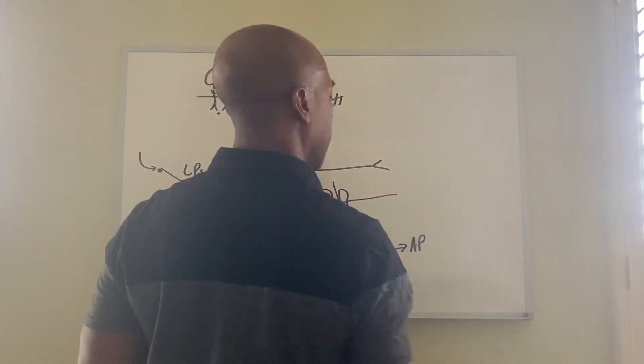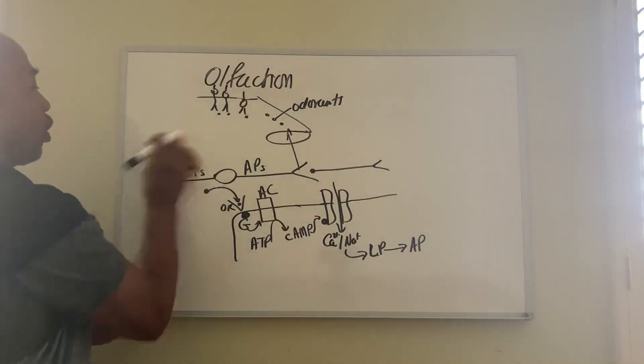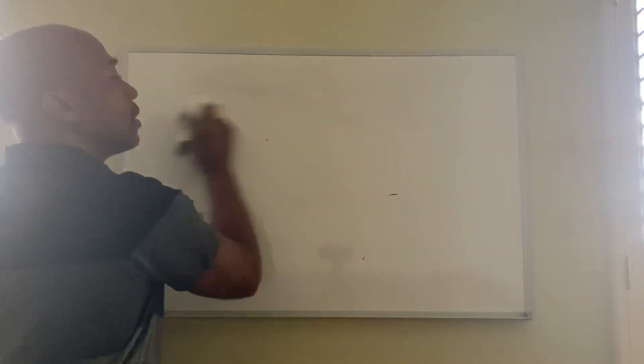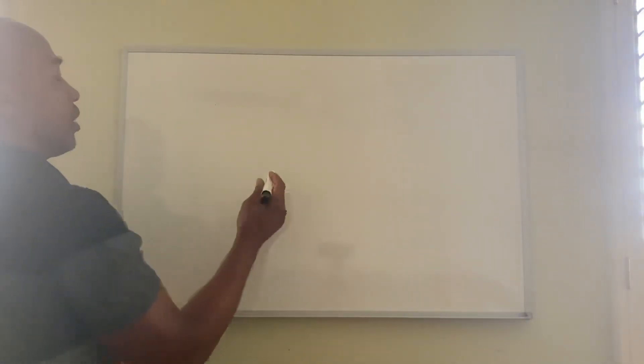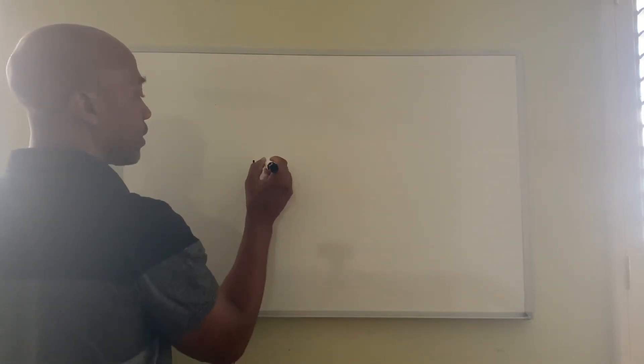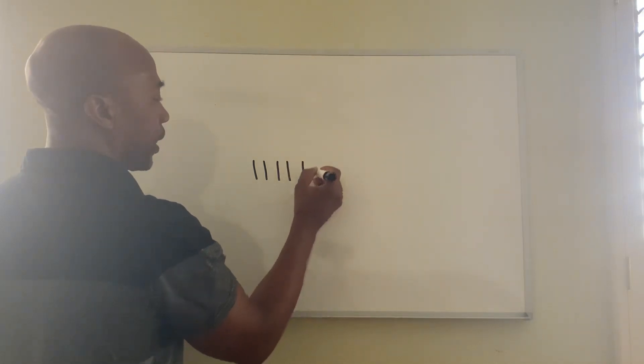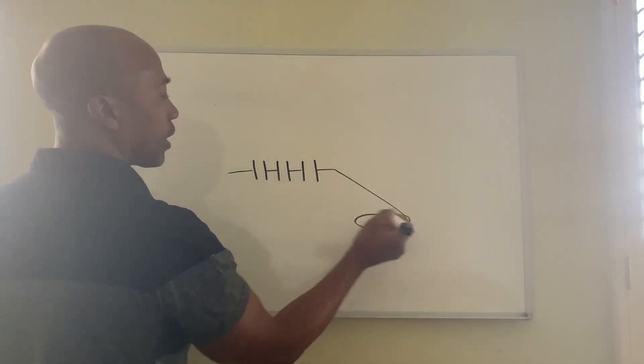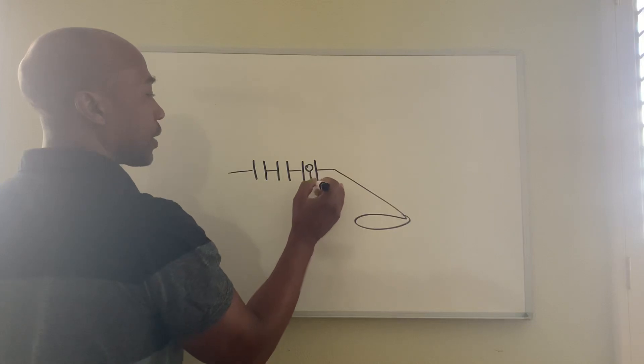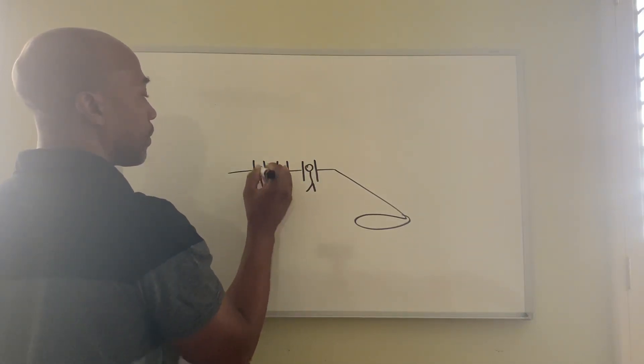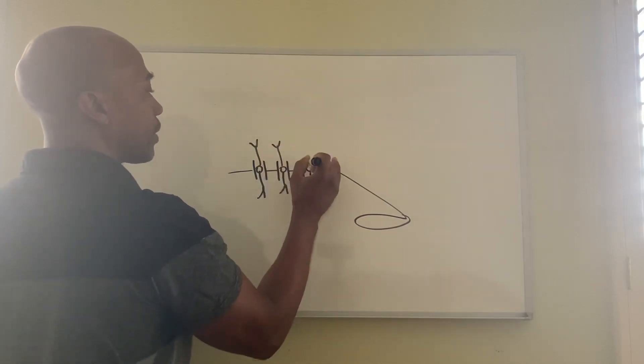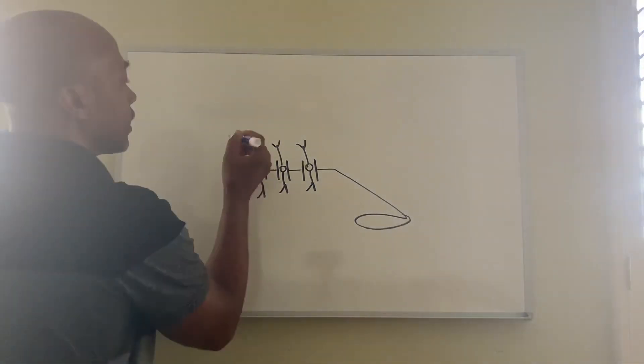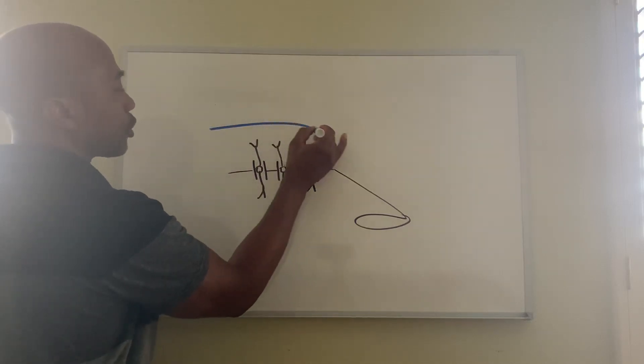So now this is your cribriform plate, cribriform plate with the olfactory foramina. Your nose, your nose. So your nerves are here coming through like that, and they synapse up here. These neurons will synapse in a structure called your olfactory bulb. This is your olfactory bulb.